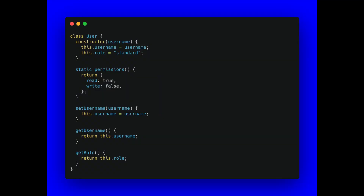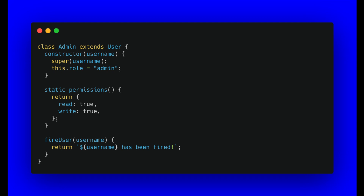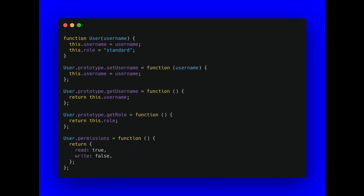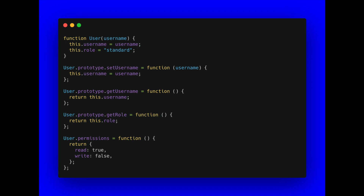Let's imagine that we're creating a system where we want to have users, but we also want to have admin users. With classes, what we could do is create a user class, put all of our methods and properties inside of that class, and then have an admin class that extends from the user — pulling in all the methods and properties — and then tweak a few things inside of the admin class. Prior to the introduction of classes, we would have likely written something such as what you can see on the screen. Instead of using the class keyword, we would simply create a function, and this function doesn't require the use of a constructor method, so we would just pass the parameters we need into the function itself.